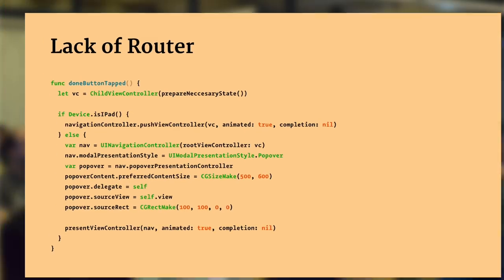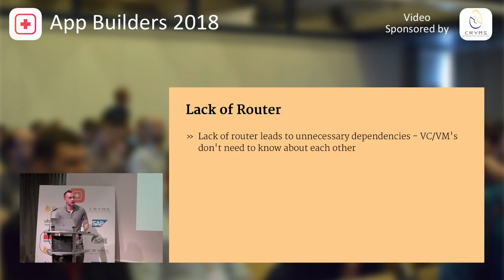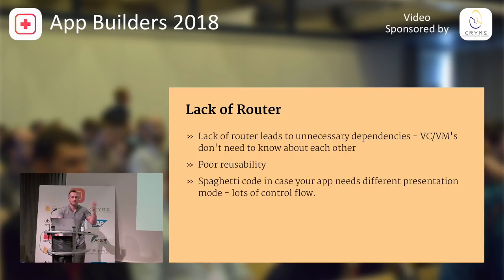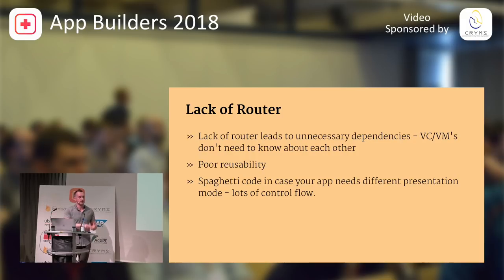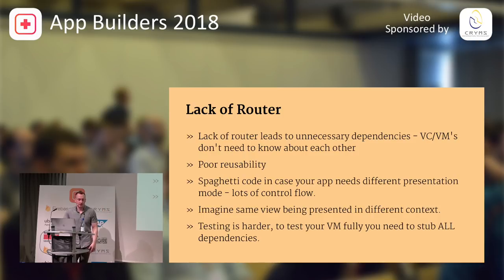With size classes and multitasking, there are way more configurations to deal with, which creates a lot of spaghetti code. Lack of a router leads to unnecessary dependencies, tight coupling between screens that don't need to know about each other, and less reusable code — for example a user profile screen that needs to be shown from multiple contexts can't easily be reused. Testing becomes really hard with all those unnecessary injected dependencies.